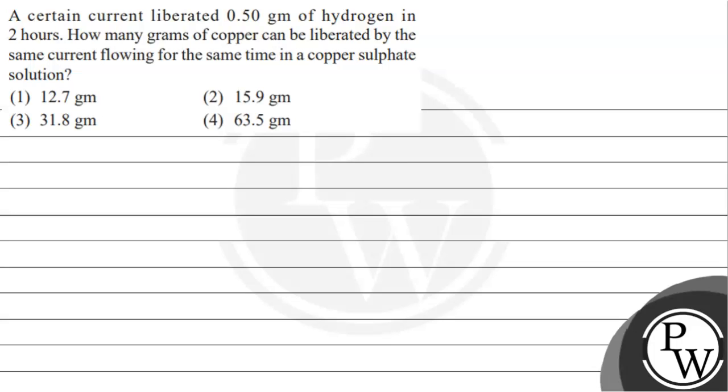Hello Bachchan, let's read this question. A certain current liberated 0.5 gram of hydrogen in 2 hours. How many grams of copper can be liberated by the same current flowing for the same time in a copper sulfate solution? And options given are 12.7 gram, 15.9 gram, 31.8 gram, 63.5 gram. So let us understand this.